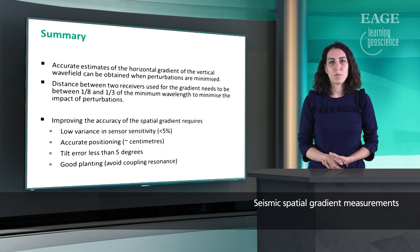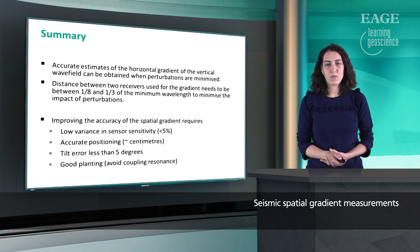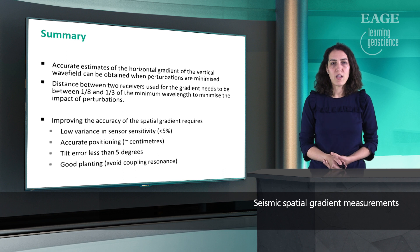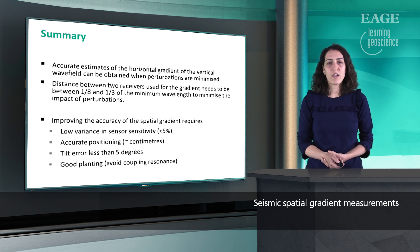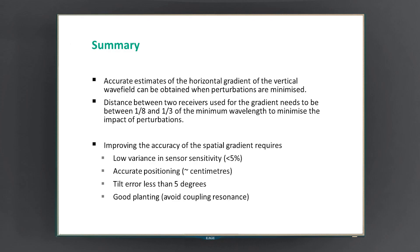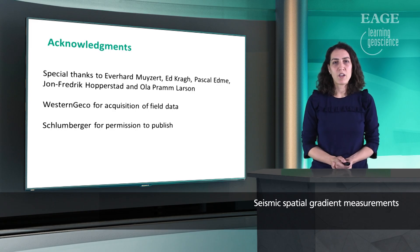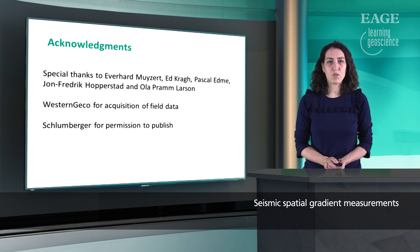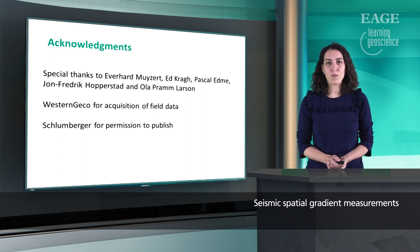It is possible to measure the spatial gradient of the wave field; however, perturbations need to be minimized. The distance between two receivers used for the gradient should be between 1/8 and 1/3 of the minimum wavelength to minimize perturbation impact. Improving accuracy requires low variance in sensor sensitivity — less than 5% — accurate positioning in the order of centimeters, tilt error less than five degrees, and well-planted geophones to avoid resonance effects. Finally, I would like to thank my colleagues and Western GECO for acquiring the data, and Schlumberger for permission to publish. Please visit the SEG YouTube channel for more e-lectures.